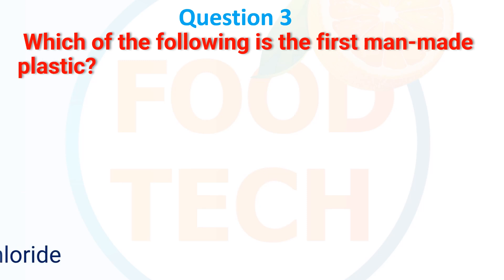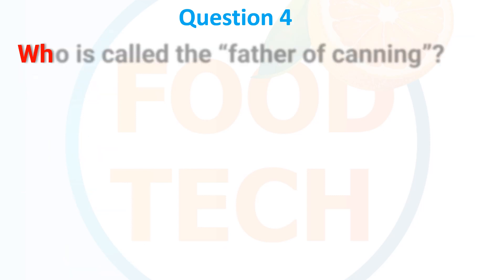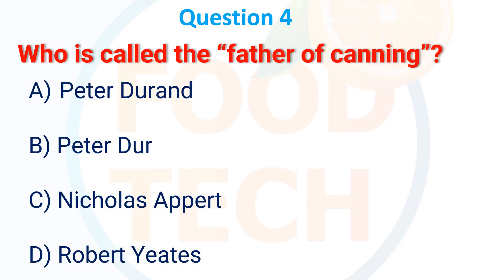Which one of the following is the first man-made plastic? A) Parkesine, B) Nylon, C) Teflon, D) Polyvinyl chloride. The answer is A) Parkesine. Who is called the father of canning? A) Peter Durand, B) Peter Door, C) Nicholas Appert, D) Robert Easties. The answer is C) Nicholas Appert.